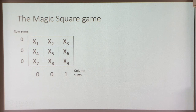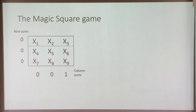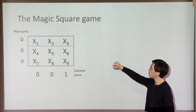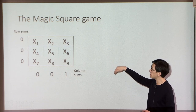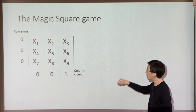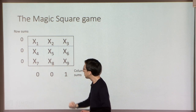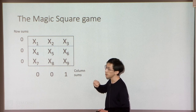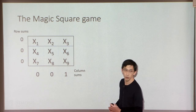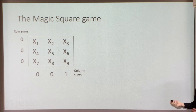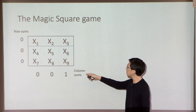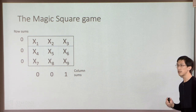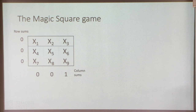Bell's answer is very simple to describe through something called the magic square game. Think of a three-by-three grid of binary variables X1 through X9. These variables must satisfy six constraints: the parity of every row must be zero, the parity of the first two columns must be zero, but the three variables in the last column must sum to one. It's easy to see there's no way to assign zeros and ones to satisfy all these constraints — this is not a satisfiable constraint satisfaction problem.